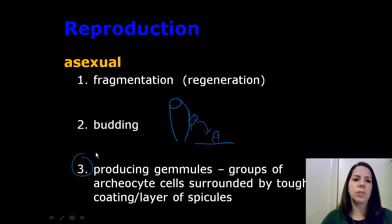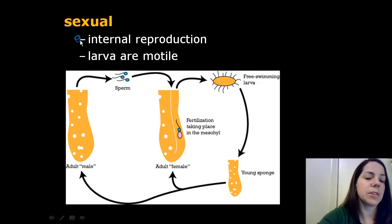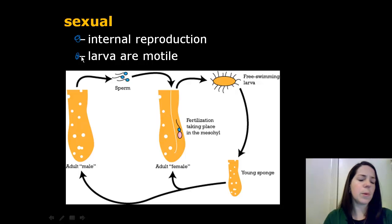Okay, now on to sexual reproduction. Sponges carry out internal reproduction and the larvae are motile. Most sponges create both sperm and eggs, so they are hermaphrodites. However, the sperm do fertilize the egg in another sponge, not the same egg within the same sponge.